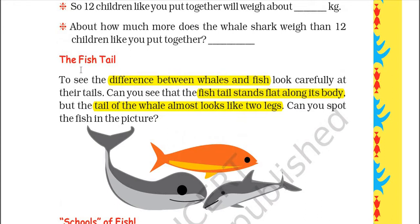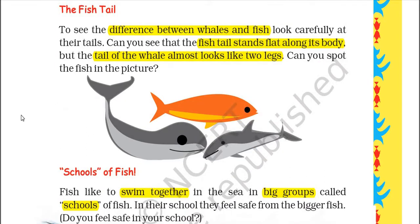The Fish Tail — to see the difference between whales and fish, look carefully at their tails. A fish's tail stands flat along its body, but the tail of the whale looks almost like two legs. You can spot the fish in a picture because its tail is flat along its body, while the whale's tail is like two legs.